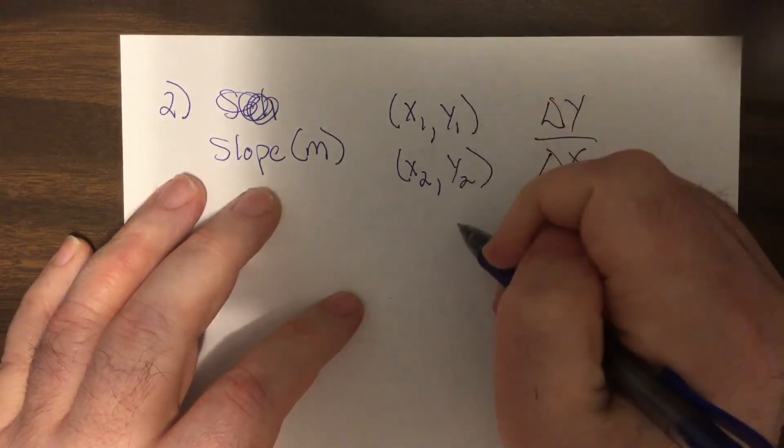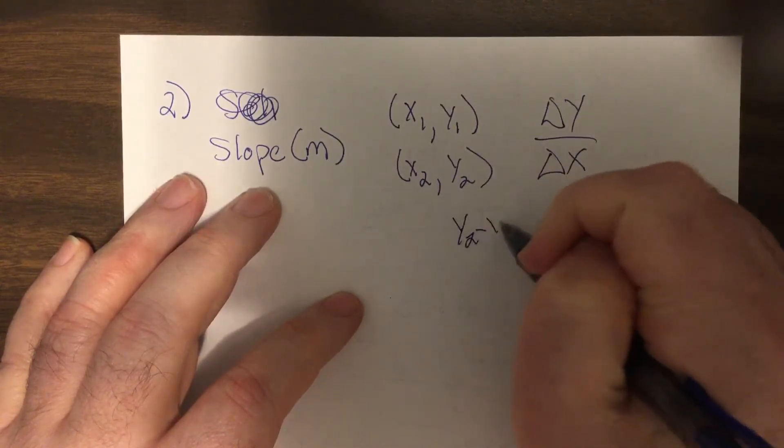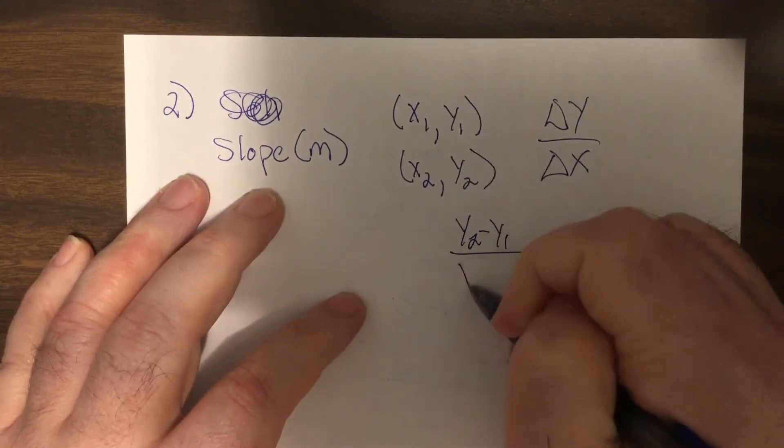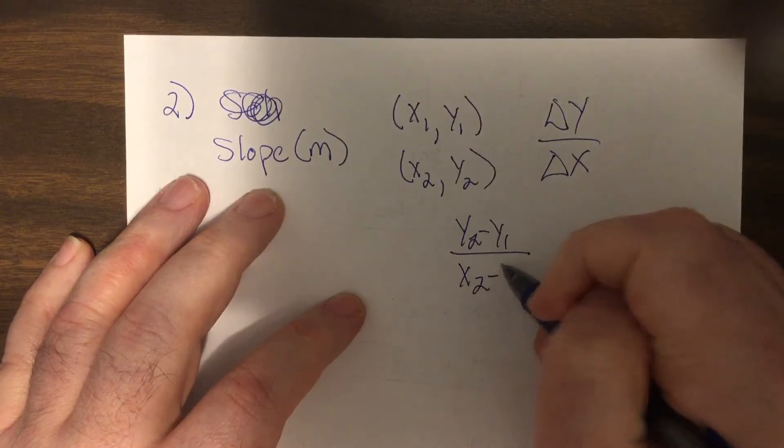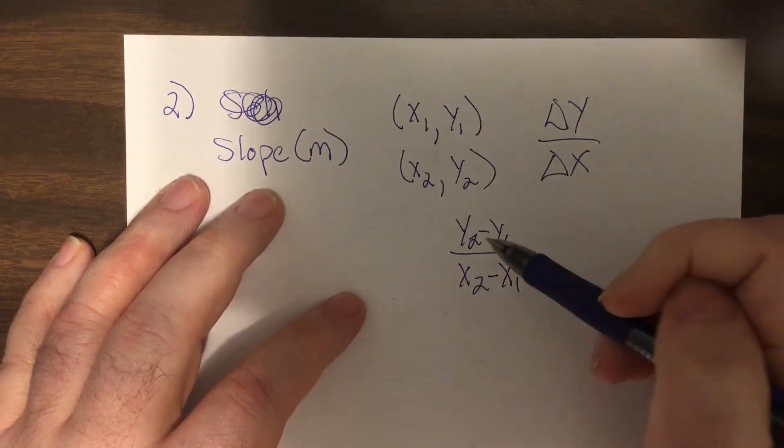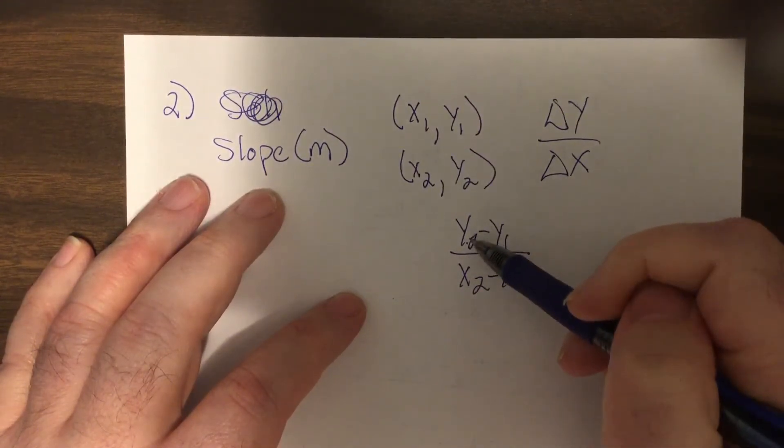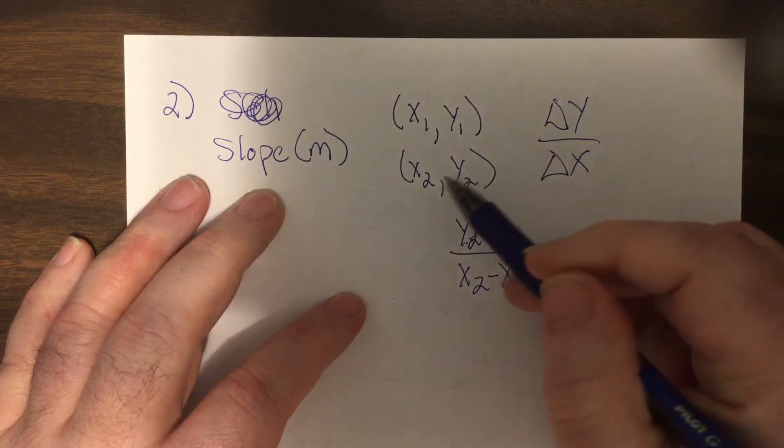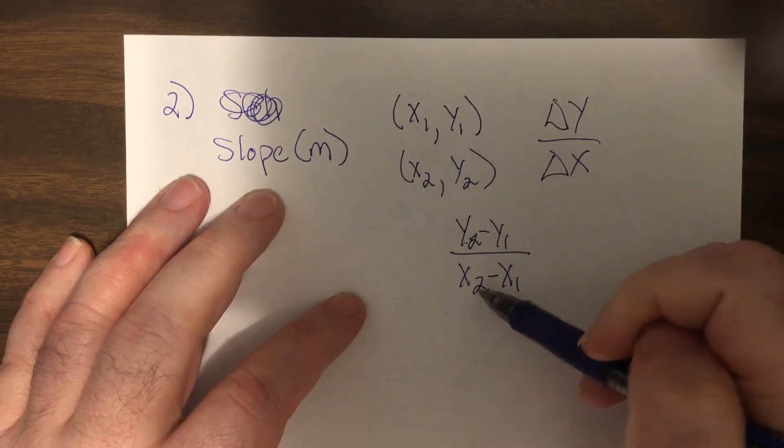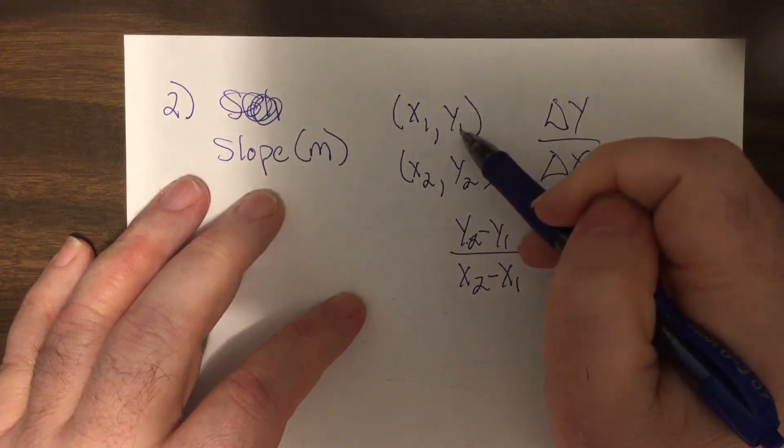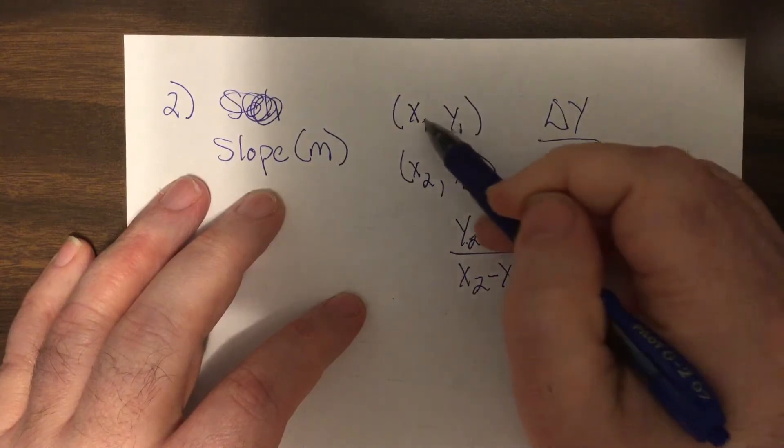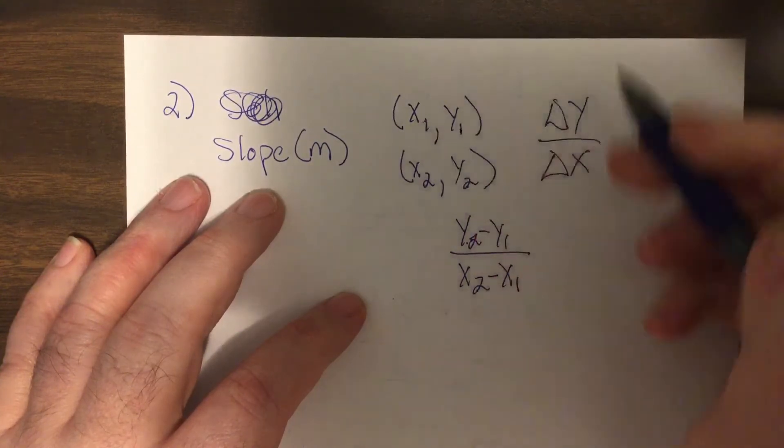It would be change in the y's over change in the x's; change is subtraction. Whatever y you start with on top, that ordered pair's y, you have to start with that x on the bottom. You can start with either one, but you have to be consistent.